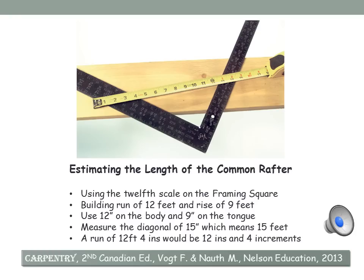The carpenter is able to estimate the length of the common rafter without doing a lot of calculations. On the framing square, on the outside scale, the inches are divided into twelfths of an inch — 12 separations between the inch marks. We can use that as a scale, each space representing one inch and each inch representing one foot. So if we use the twelfth scale on the framing square when the building run is 12 feet, it would be held on the 12-inch mark on the left-hand side, and a rise of 9 feet would be held at the 9-inch mark on the right-hand side — so 12 inches on the body, 9 inches on the tongue of the square.